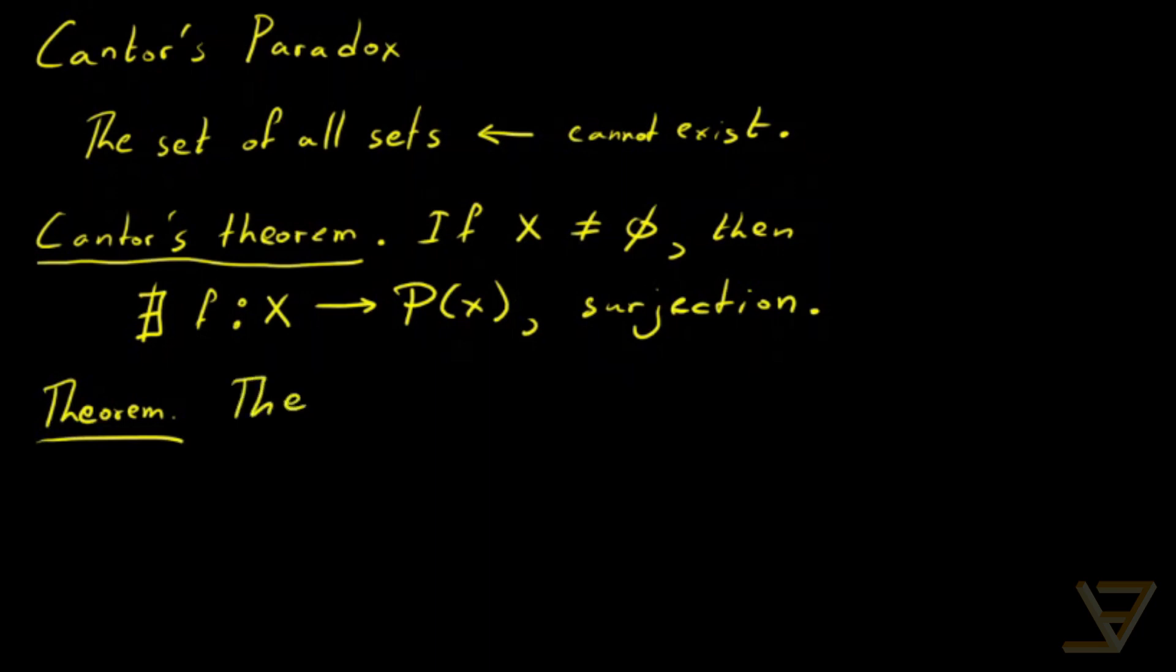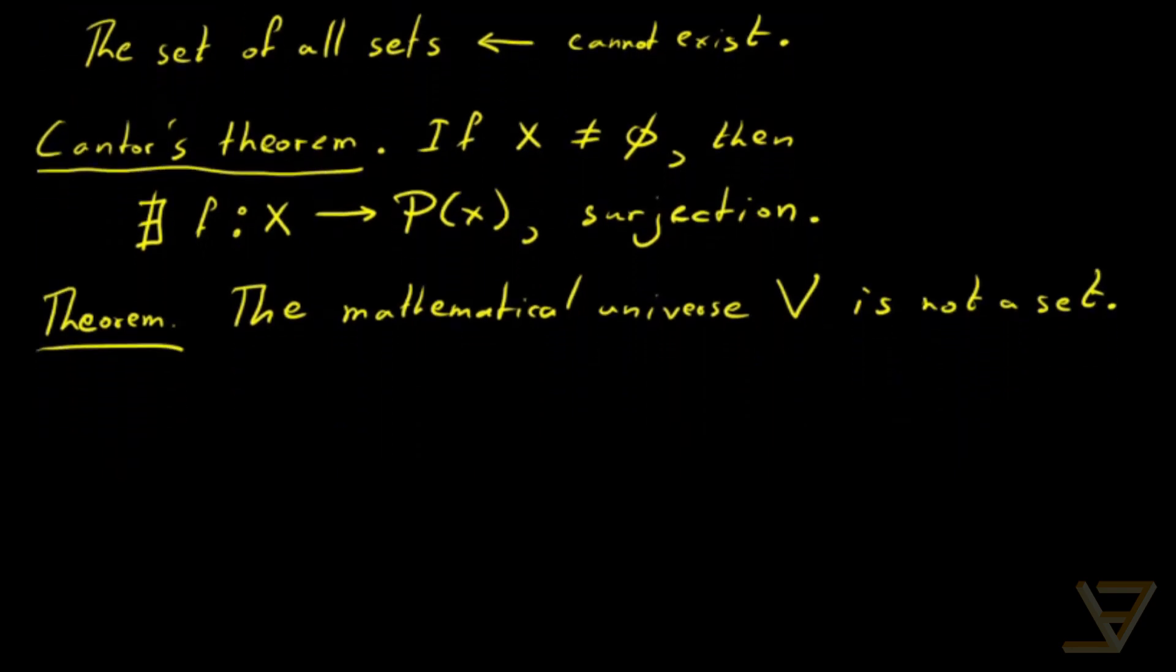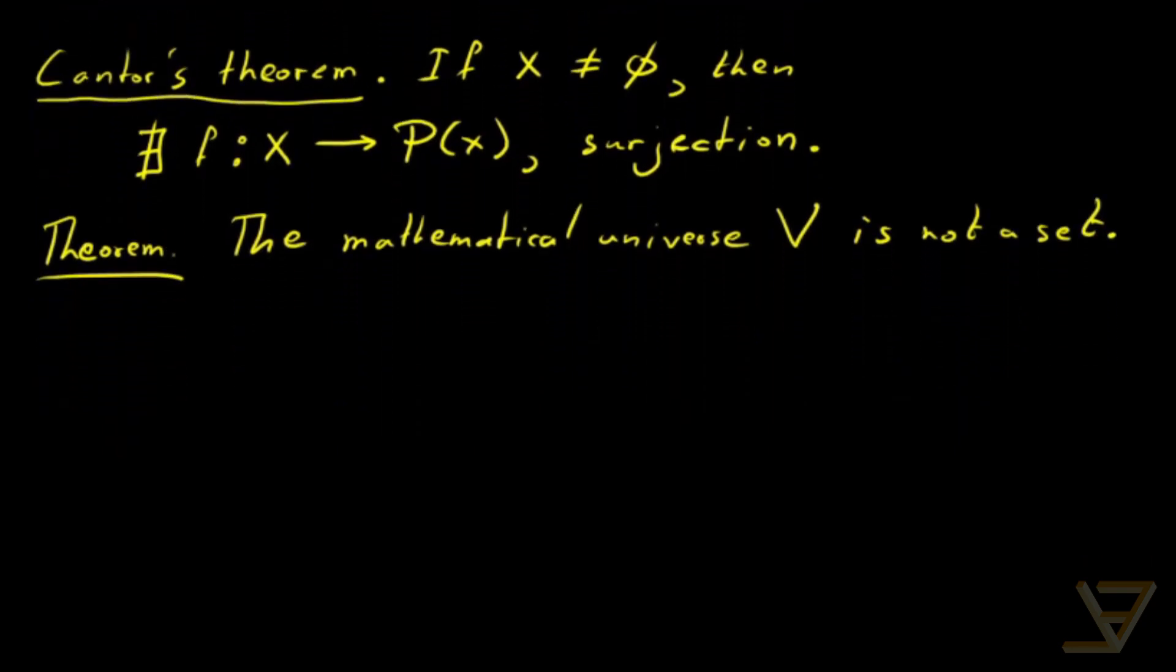What we're asserting is that the mathematical universe, V, is not a set. So like troublesome mathematicians, what we're going to do is assume otherwise. So suppose V is a set.